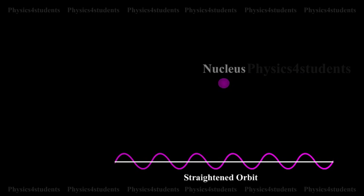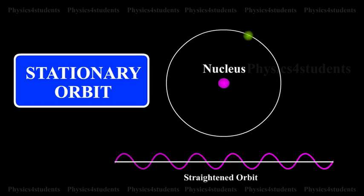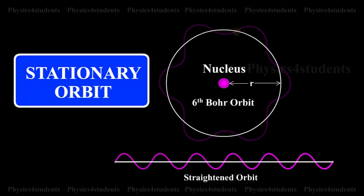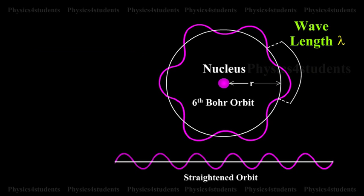On the basis of de Broglie's hypothesis, an atom model was proposed in which the stationary orbits of Bohr's model were retained, but with the difference that electron in various orbits behaves as a wave. This is shown in the animation.